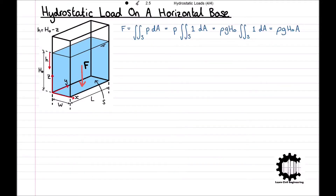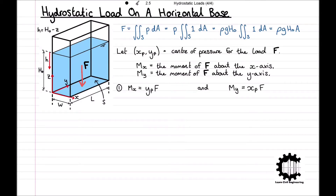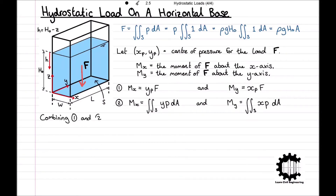To find the point of action of the hydrostatic load on the base surface—in other words the centre of pressure of F on S—we will use moments. Let XP, YP denote the centre of pressure for the load F, and let MX denote the moment of F about the x-axis and MY the moment of F about the y-axis. We then have MX equals YP·F and MY equals XP·F. Additionally, the moments MX and MY can be found using the hydrostatic pressure distribution: MX equals the surface integral of Y·P with respect to A, and MY equals the surface integral of X·P with respect to A. Combining both sets of equations gives F·YP equals the surface integral of Y·P with respect to A, and F·XP equals the surface integral of X·P with respect to A.